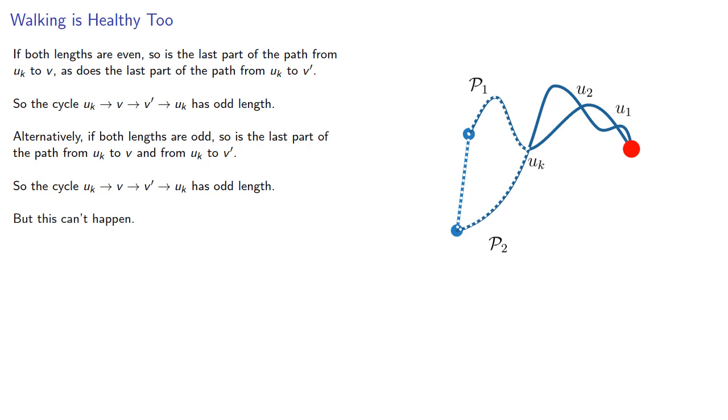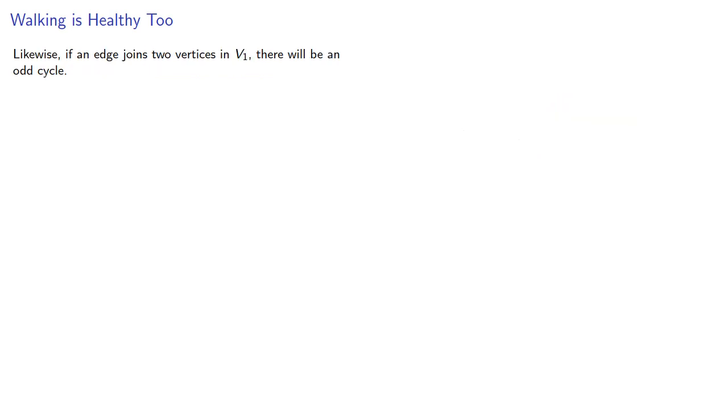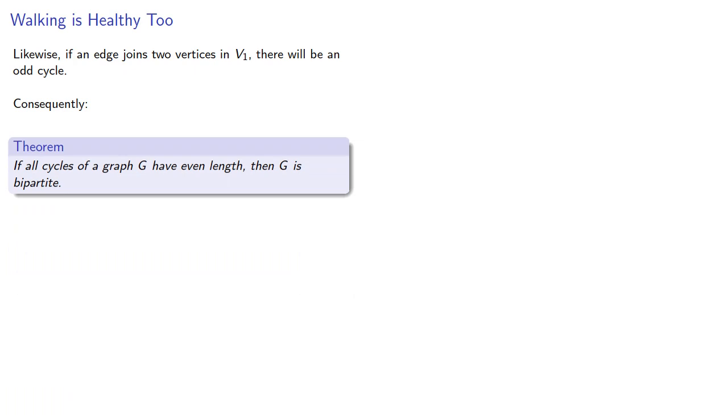But this can't happen, so no edge can join two vertices in v2. Likewise, if an edge joins two vertices in v1, there will be an odd cycle. Consequently, if all cycles of a graph G have even length, then G is bipartite.